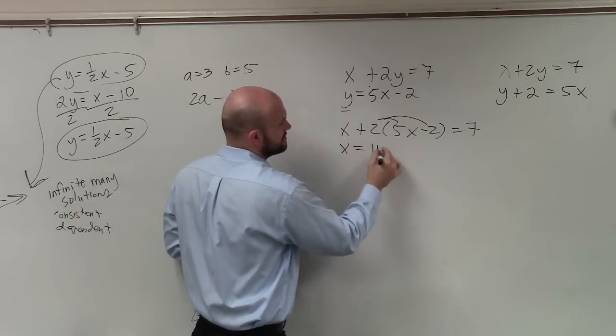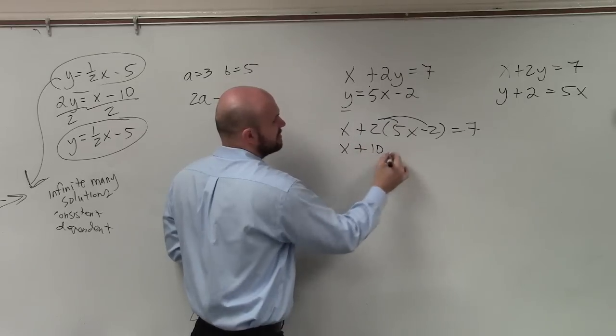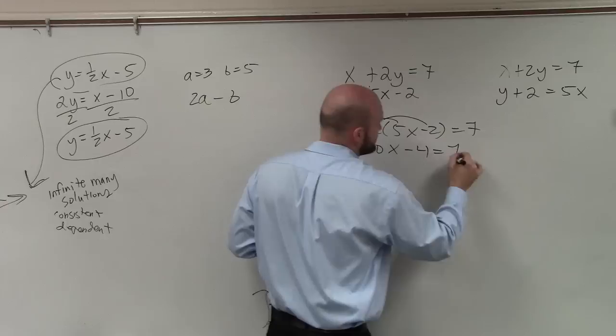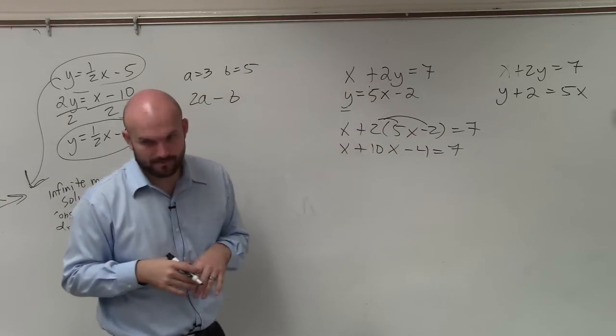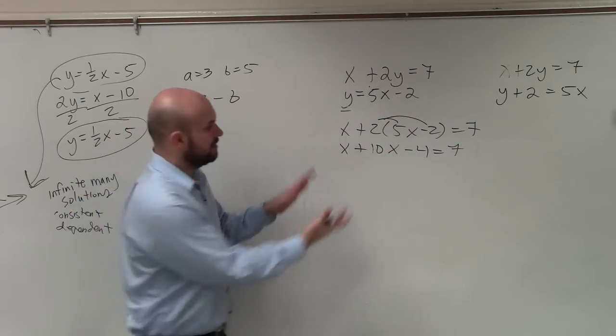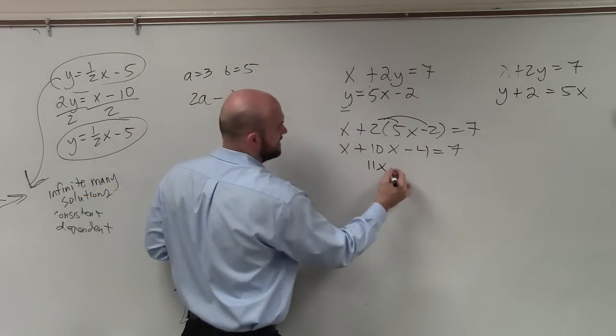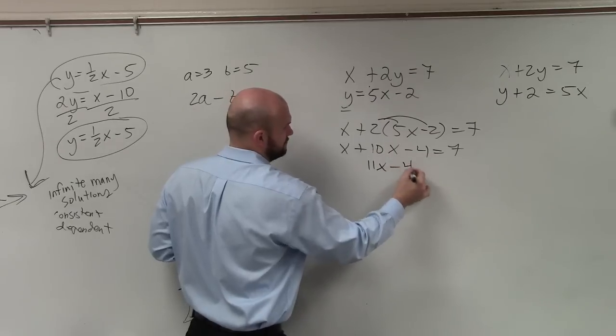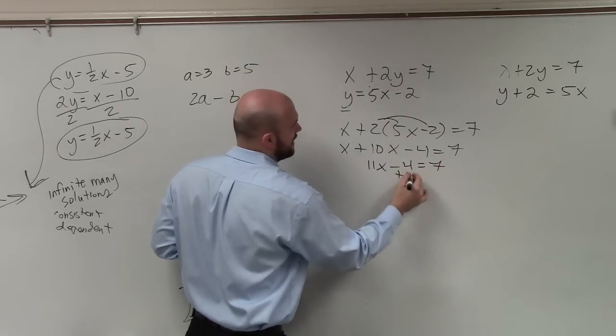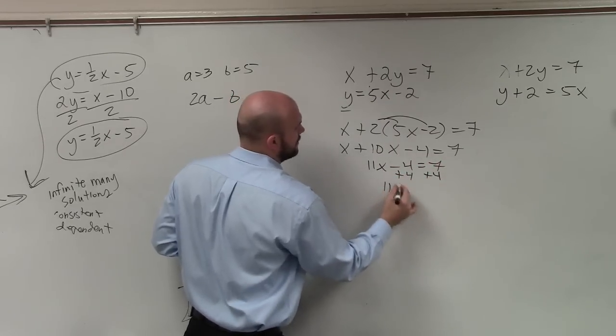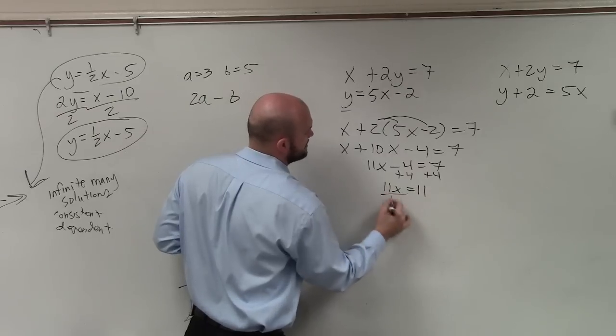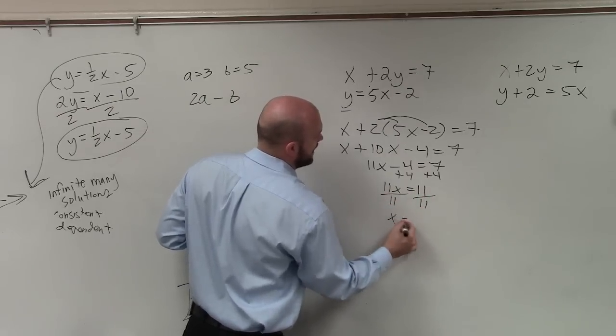So I have x equals, sorry, x plus 10x minus 4 equals 7. Combine my like terms. 11x minus 7, add 4, add 4. 11x equals 11, divide by 11, divide by 11, x equals 1.